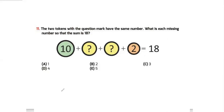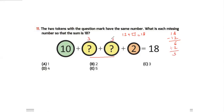Question number 11: the two tokens with the question mark have the same number. What is each missing number so that the sum is 18? The visible numbers are 10 and 2, giving 12. Then 18 minus 12 equals 6, and since 6 is split between two question-mark tokens, each token is 3. My answer is option C.